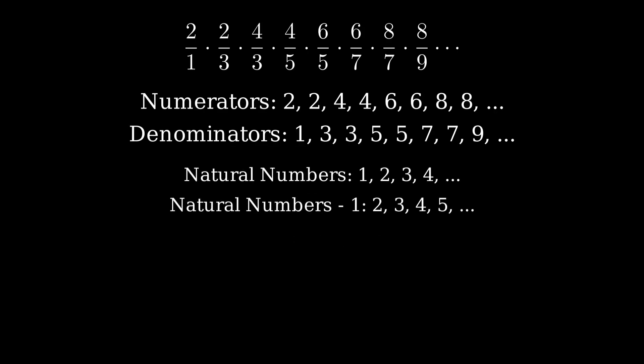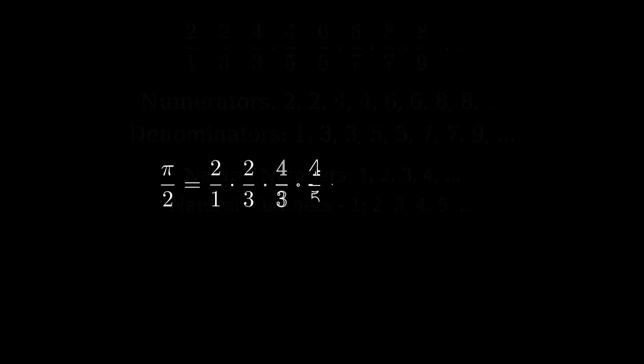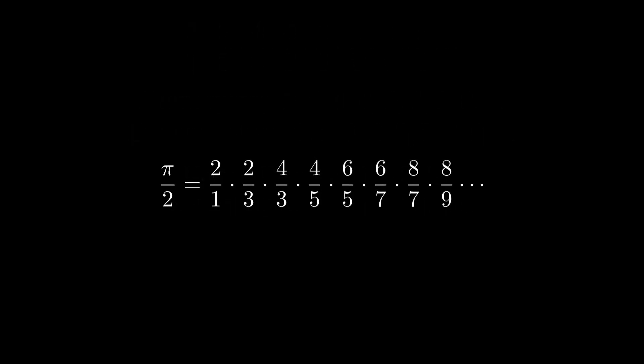One way to view this is as a product where the terms involve all natural numbers, and another set of terms involves natural numbers excluding 1. When these infinite rational terms are multiplied together, the result is exactly pi over 2.